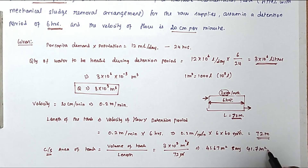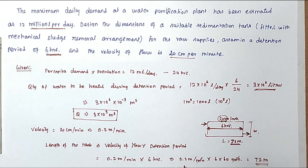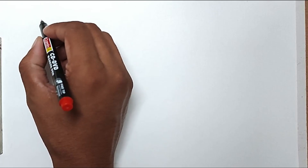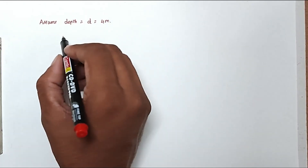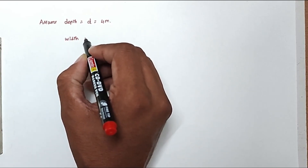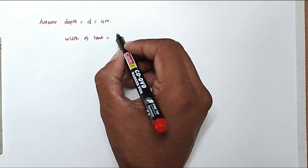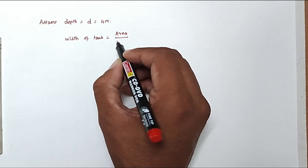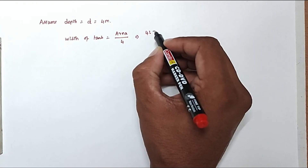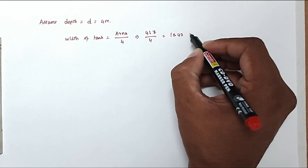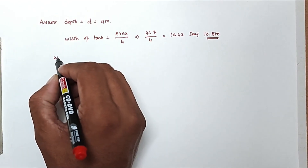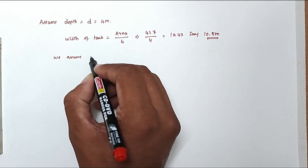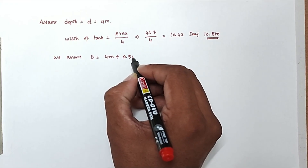The cross-sectional area is approximately 41.7 m². We now assume the effective depth equals 4 meters. Width of tank = area ÷ depth = 41.7 ÷ 4 = 10.42 meters, say 10.5 meters. The total depth equals 4 meters plus 0.5 meters of freeboard.